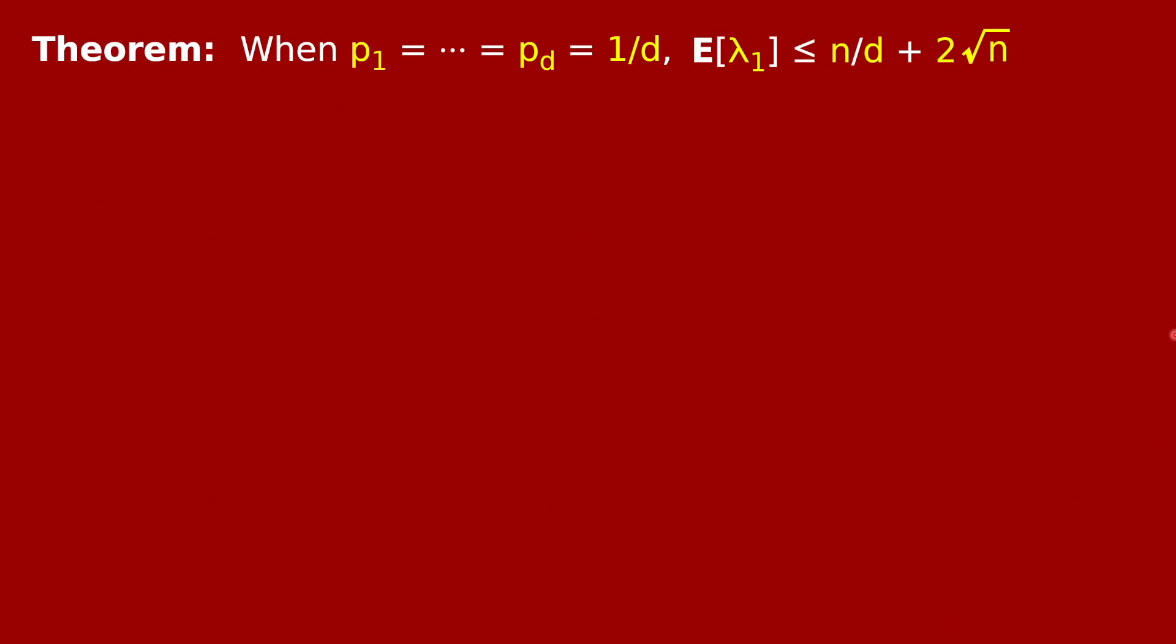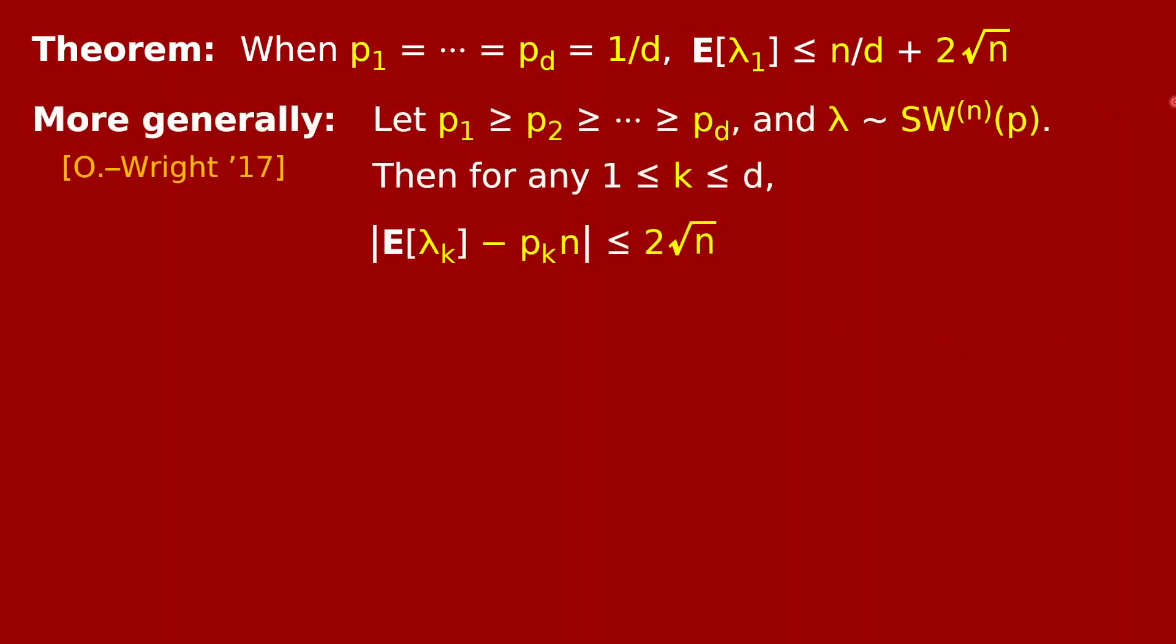So not only do we have this theorem about the case when all the p's are equal and equal to 1 over d, but more generally it was shown that a similar statement holds for every row. For the kth row and for general values of p1 through pd, it was shown that the expected value of lambda k, which should be around pk times n as we're planning to use lambda k over n as our estimator for pk, the expected value of lambda k is within exactly 2 root n of pk times n for every k. This is both an upper and lower bound on the difference. Actually, you can give a slightly stronger result in case pk happens to be smaller than 1 over d. In the next video I'll talk about how this is proven using various combinatorial properties of the Pokemon process or the RSK process.